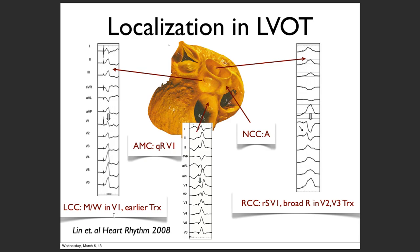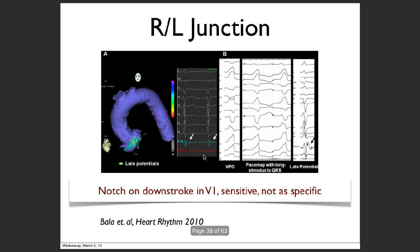To differentiate LVOT subtypes, look in lead V1. Transitions are always important — whenever you see an ECG of this type, look at the transition from V1 to V3: how and where is the transition happening? This is the key to further localization.